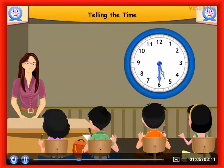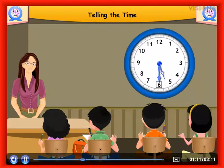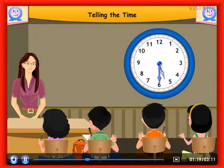Similarly, in this clock, the hour hand is halfway between 5 and 6. The minute hand is at 6. The time is 5.30. We also say that it is 30 minutes after 5, or half past 5.